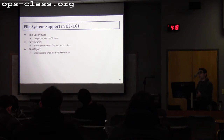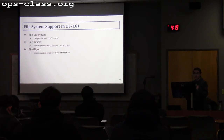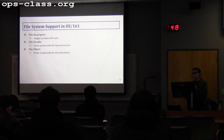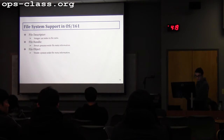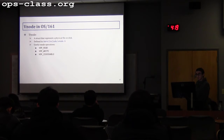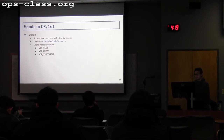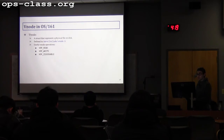In OS161, a file descriptor is an integer and the index into the file table. A file handle is a structure — process-wide file meta information, private to the process unless forked, in which case it's shared. The file object is a vnode — the physical file, implemented and ready for use, shared system-wide. A vnode is a representation of the physical file, defined in vnode.h. It has very useful operations you'll need: VOP_READ, VOP_WRITE, and VOP_IS_SEEKABLE, which you'll use with lseek.